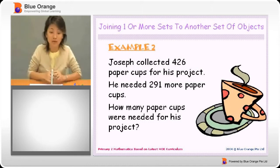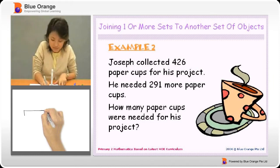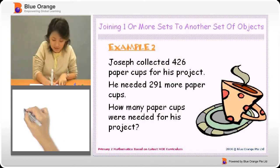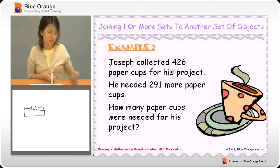Let's take a look at the models. Joseph collected 426 paper cups. That's easy to draw. Just draw a box. And I say this is 426. Very simple.